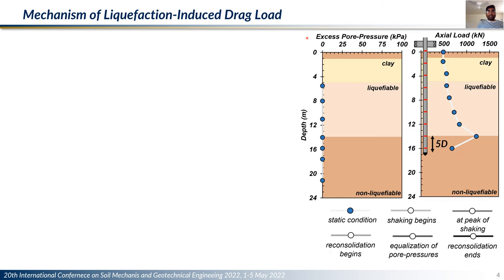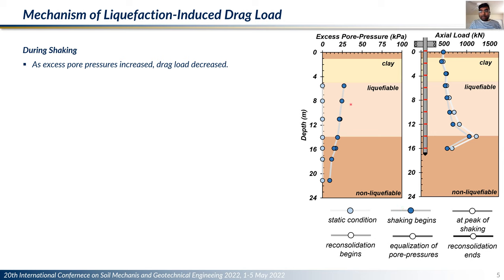Let me describe the mechanism of liquefaction-induced drag load through the journey of a shaking event. In the figure on the right, I am showing the excess pore pressure profile with depth and the axial load profile with depth, along with the different stages during a shaking event. At static conditions before an earthquake, the excess pore pressure at all depths is zero. The 5D pile had an initial drag load developed from a past shaking event, with negative skin friction developed in the liquefiable layer as well as the clay layer. When shaking starts, excess pore pressure develops, decreasing the effective stress of the soil and decreasing the negative skin friction and drag load, moving the axial load profile towards the left.